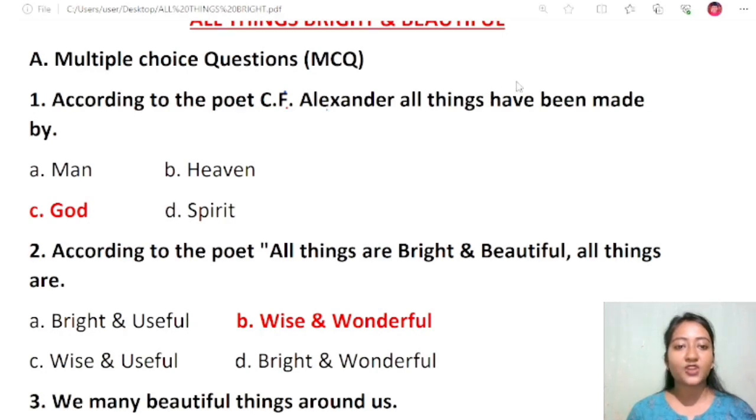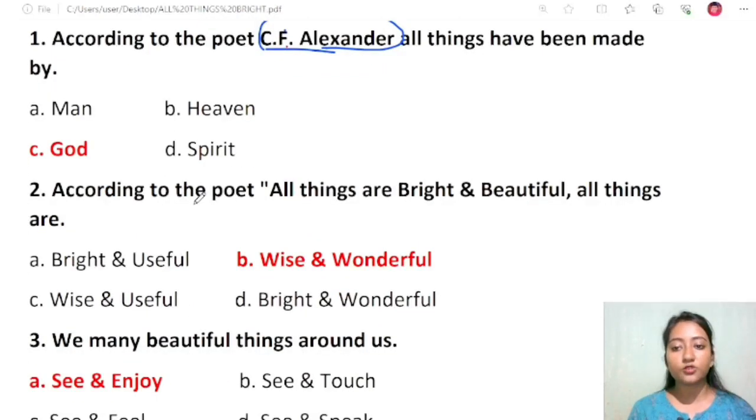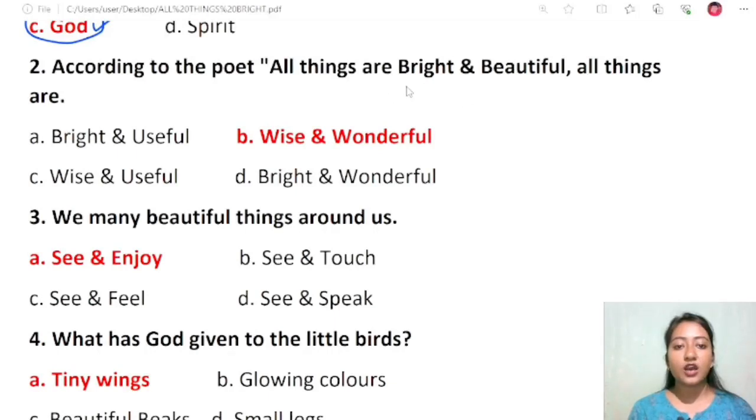According to the poet C.F. Alexander, all things have been made by - and the options are man, heaven, God, and spirit. So according to the poet C.F. Alexander, Cecil Francis Alexander, the correct option is God. Question 2: According to the poet, all things are bright and beautiful, and all things are - the correct option is wise and wonderful, which is mentioned in the very first line of the poem.